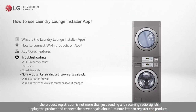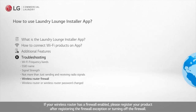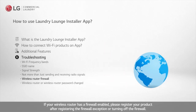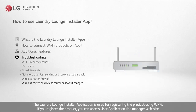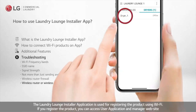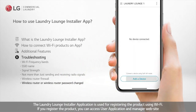If the product registration is not completing, unplug the product and connect the power again about one minute later to register the product. If your wireless router has a firewall enabled, please register your product after registering the firewall exception or turning off the firewall. If the wireless router or password has been changed after registering the product, or the internet service provider changes and the password changes, the product must be deleted and re-registered for use.